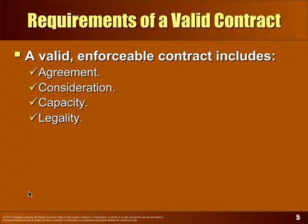We'll go into more detail with each element. An agreement has two parts — offer and acceptance. One party makes an offer, the other party accepts exactly what was offered, and then they have agreement. The law likes to call this the 'meeting of the minds.'